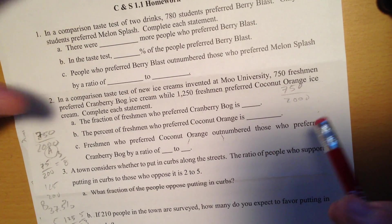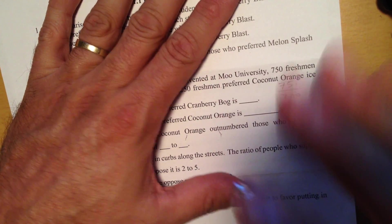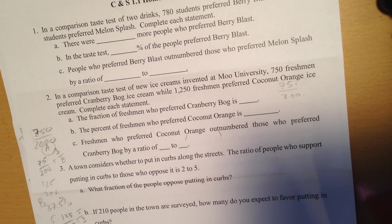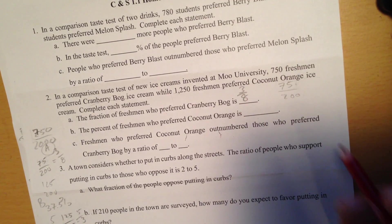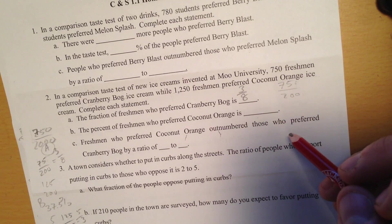Now 750 over 2,000, I want to reduce my fraction so I'm going to go 75 over 200. What number goes into 75 and 200? 25 does. So it's going to be 3 over 8. So keep reducing your fraction until we have it in simplest form.